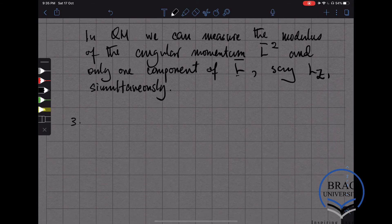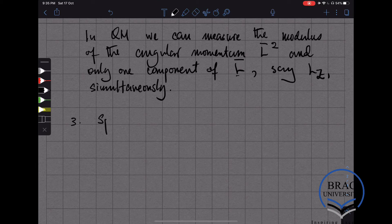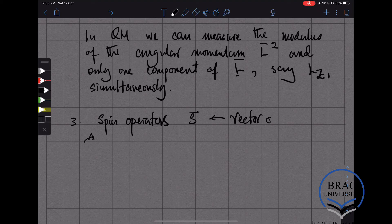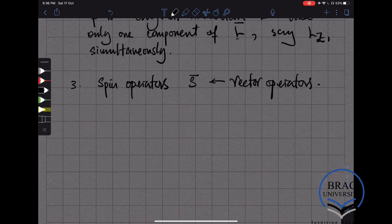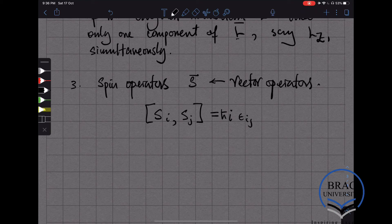Number three comment is that in quantum mechanics, there are other vector operators known as spin operators, usually denoted by s. Spin operators are also vector operators. What's special about spin operators is that they also satisfy the angular momentum algebra. That is, if I take the components of the spin operators and compute their commutator, then I get the same algebra as the angular momentum algebra.